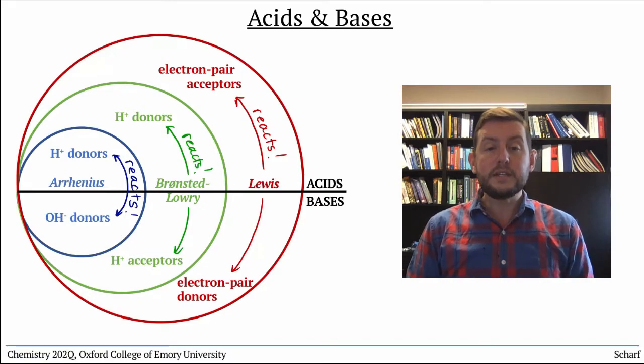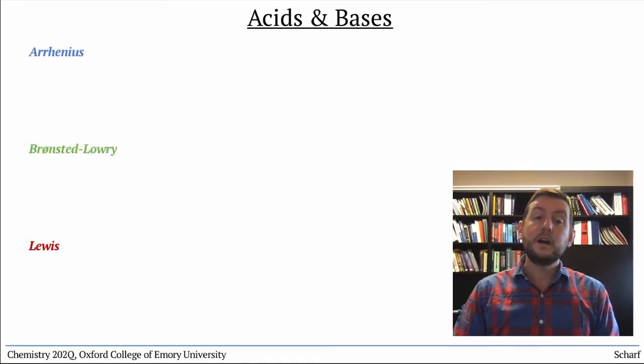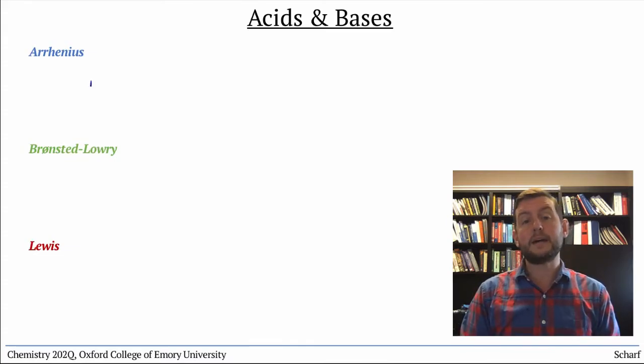We can illustrate these types of acids using chemical equations. Arrhenius acids are molecules that contain a covalent bond between hydrogen and another atom or group of atoms. We usually abbreviate them as HA.